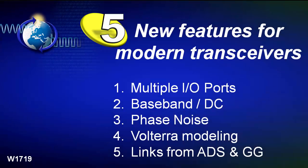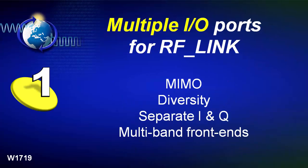The very first feature of interest is that Spectrasys now allows multiple IO ports in the RF link. This is useful for MIMO, for diversity, for separate IQ and Cartesian architectures, as well as multiband front ends.